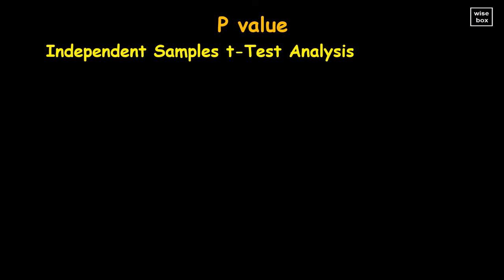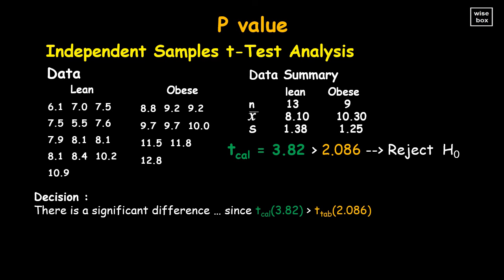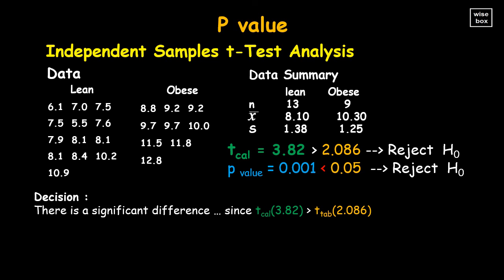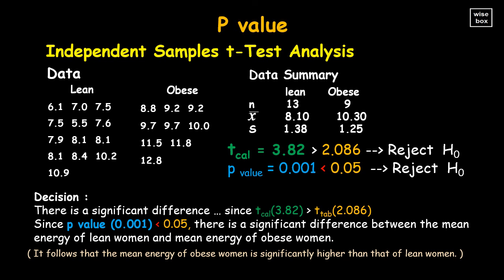For the independent samples t-test example: instead of using the calculated t-value, we can use the computed p-value of 0.001, which is less than 0.05. The null is rejected. Since the p-value of 0.001 is less than 0.05, there is a significant difference between the mean energy of lean women and mean energy of obese women. It also follows that the mean energy of obese women is significantly higher than the mean energy of lean women.